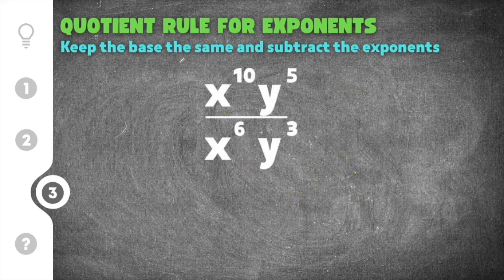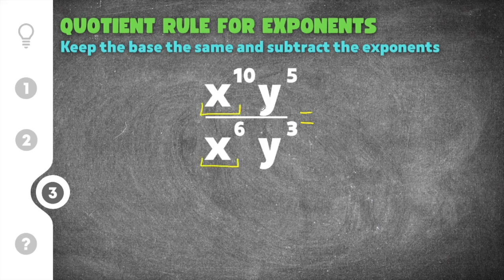Finally, the last practice problem on the quotient rule for exponents gives us x to the 10th, y to the 5th, divided by x to the 6th, y to the 3rd. Now this one's a little different because we have two separate bases. In order to use the quotient rule and divide exponential terms, you have to use exponential terms that have the same base. So the x's can be divided together and the y's can be divided together, but you can't combine x and y — they have to stay separate. To simplify this, we're going to keep the x's and the y's separate because they're not like terms.